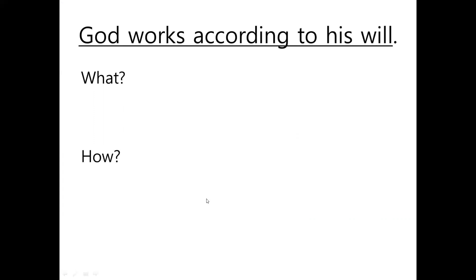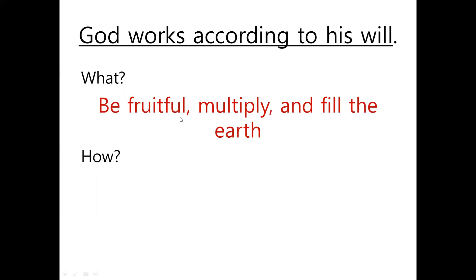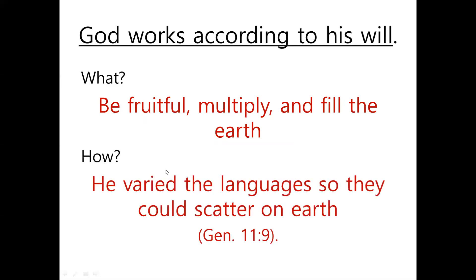We have to remember God works according to his will. His will was that people be fruitful, multiply, and fill the earth. To accomplish this will, when people built the Tower of Babel, God varied the languages so they would scatter on earth. When they used one language, they attempted to build the Tower of Babel to reach the heavens and gather together. But God wanted them to fill the earth, so to accomplish that will, he varied the languages.